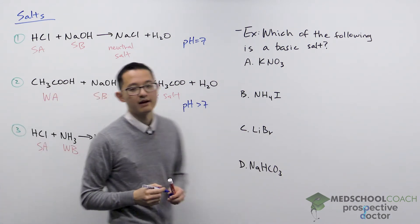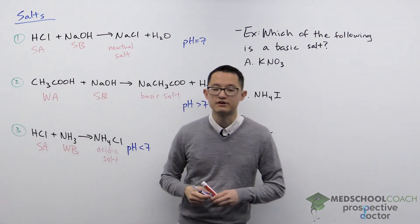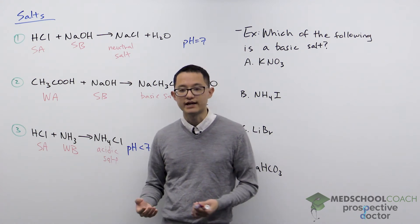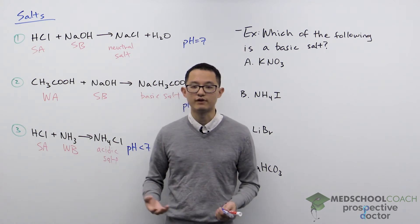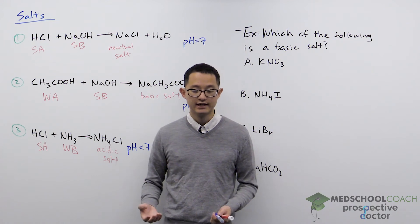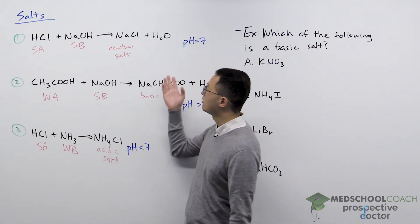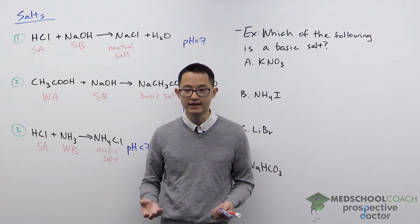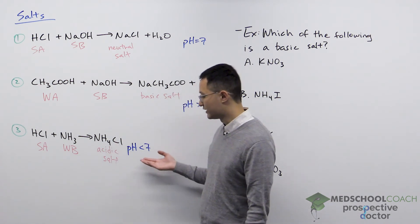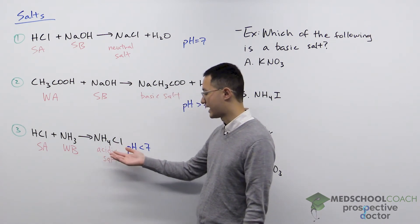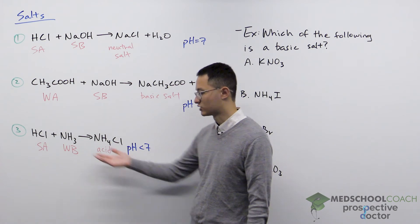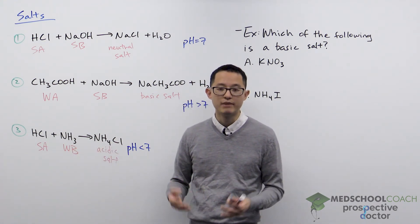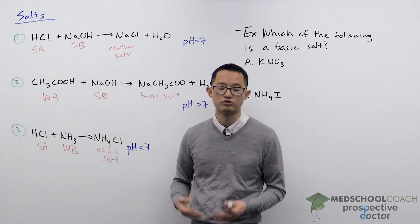This is important for the MCAT because sometimes they'll ask questions like, if I wanted to increase or decrease the pH, which of the following salts can I add? At first, most salts don't look like they would have much effect on pH, but when you recognize whether they're the conjugate acid or base of a strong acid or strong base, you can tell whether you have an acidic, basic, or neutral salt.